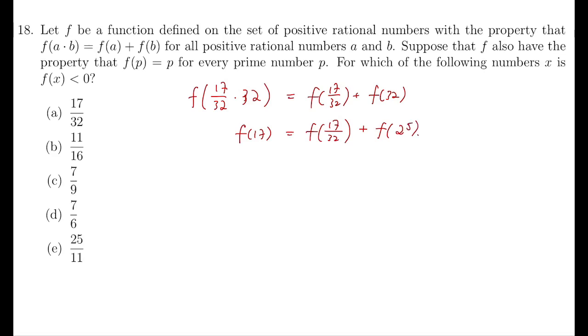And then, for F of 32, it can be written as F of 2 to the 5th. And so we can rewrite F of 2 to the 5th as 5 times F of 2. And F of 17 is exactly 17, so F of 17 over 32 is just 7, which is positive, so A is wrong.